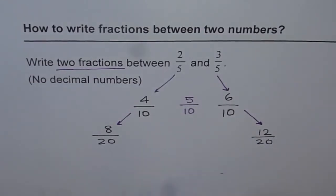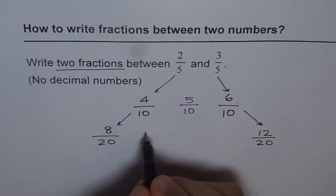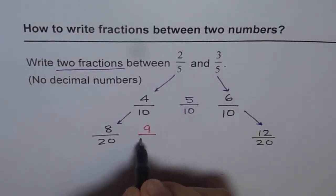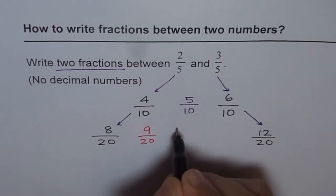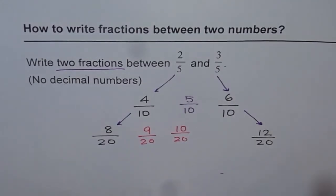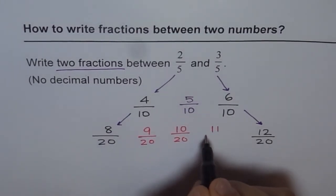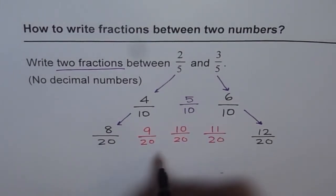And now we can write quite a few fractions in between. So what are the fractions in between 8 over 20 and 12 over 20? Well, the fractions could be 9 over 20, 10 over 20. We wanted 2, but we can write even 3. 11 over 20. Like this.